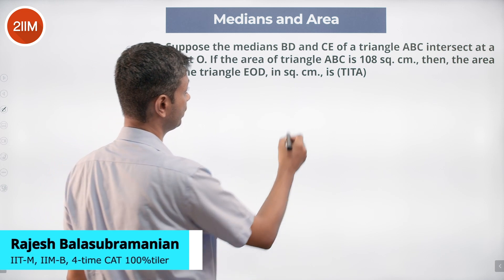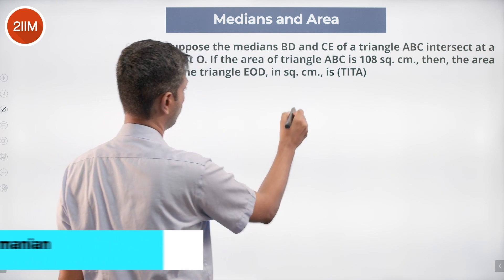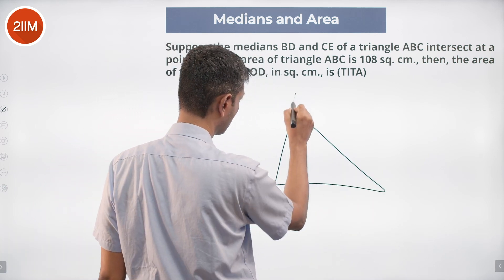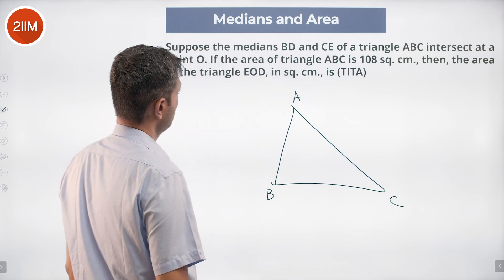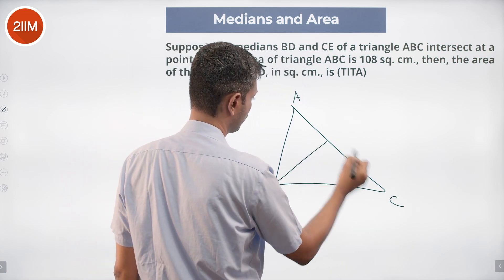Suppose the medians BD and CE of triangle ABC intersect at a point O. Let's draw this: ABC, BD and CE.